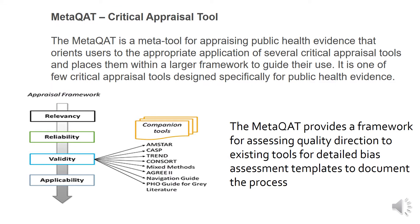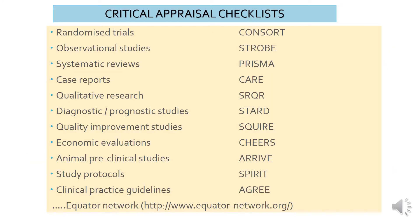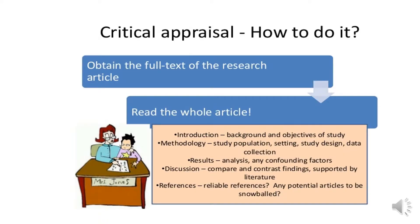These are examples of critical appraisal tools. The companion tools are vast and mainly related to validating the research paper. The critical appraisal checklists are many and depend on which study design is used. For example, for randomised trials you use a checklist called CONSORT.